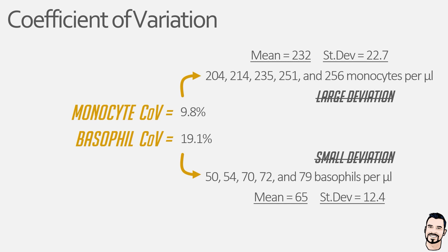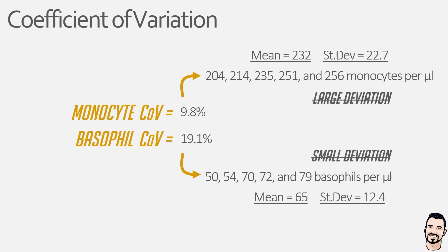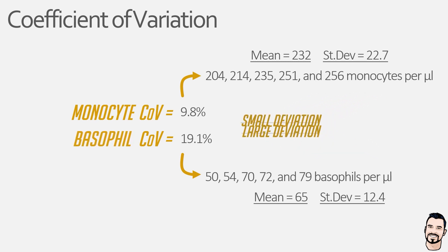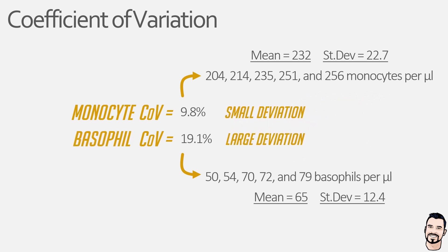So in these examples, the deviation in basophils is approximately 20% above and below the mean, whereas it's approximately 10% for monocytes. This essentially shows there is a greater deviation in the basophil counts than in the monocyte counts. And that is essentially the coefficient of variation — an indicator of how spread out data is as a ratio of the mean value.